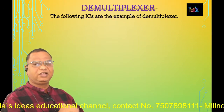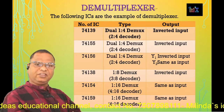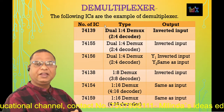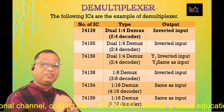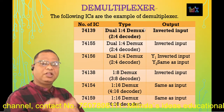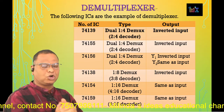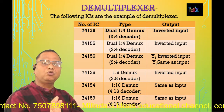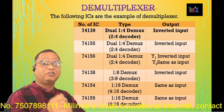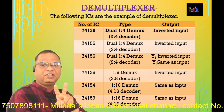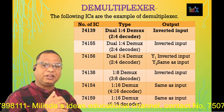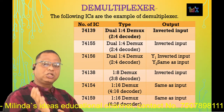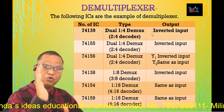The IC table is now going to be displayed on your screen. The first IC is IC 74139. This IC type is dual 1-to-4 demux. Dual means in this IC there are two demuxes, each with one input and four outputs, so it is a 1-to-4 demux. This IC is also known as a 2-to-4 decoder because there are two control lines connected to the binary input which gets decoded. The output of this IC is inverted.